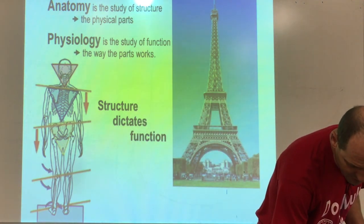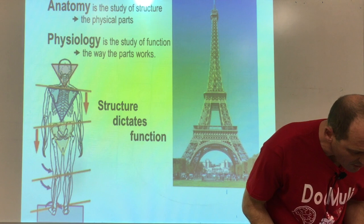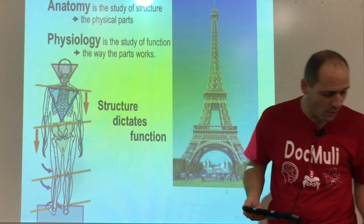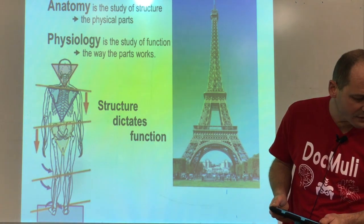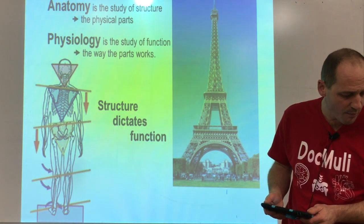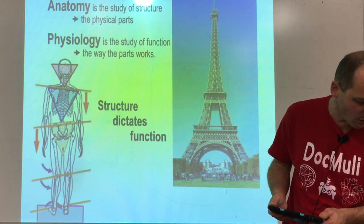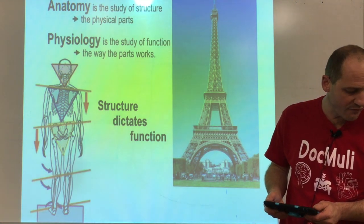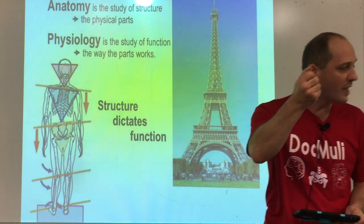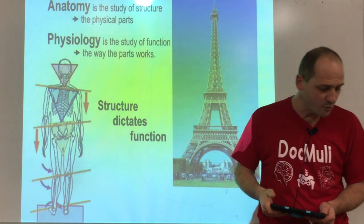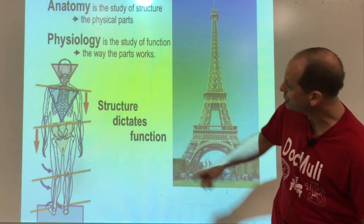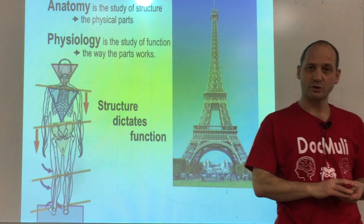What's interesting is that structure dictates function. The way that something is shaped determines what it can do. A heart is the body's pump because it is a muscle which surrounds a chamber filled with blood that, when squeezed, pumps the blood out into the attached pipes. Can you explain the concept of structure dictates function and give an example in your own words?